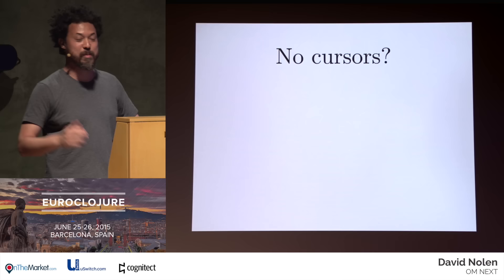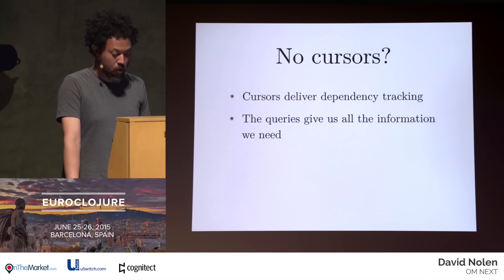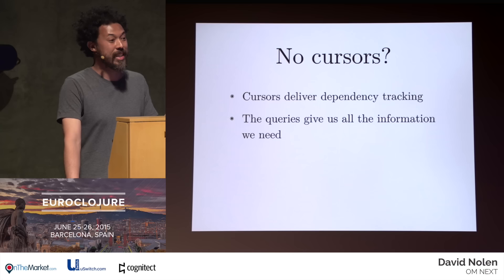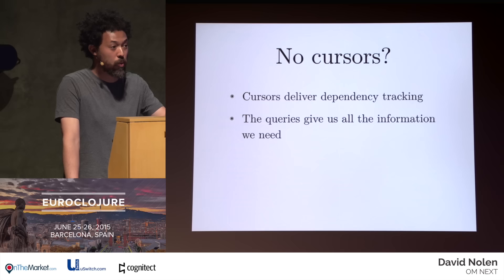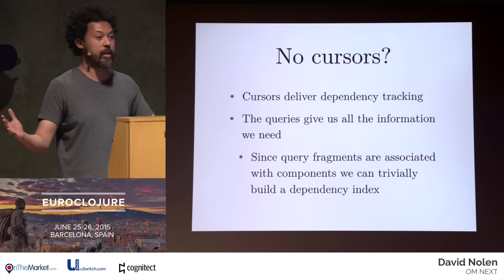No cursors. The only reason to have cursors was they deliver dependency tracking. That's it. Once you add queries to your components — once the component specifies what it needs — you can build an index on the fly. You can say at runtime, 'I know the exact data dependency path this component has, because the query just tells you.' The query describes exactly what the component needs. You don't need cursors. Your components just take values — no weird magical cursor thing. Query fragments, because they're associated with components, make building an index trivial. I wrote about 10 lines of code to make this work.